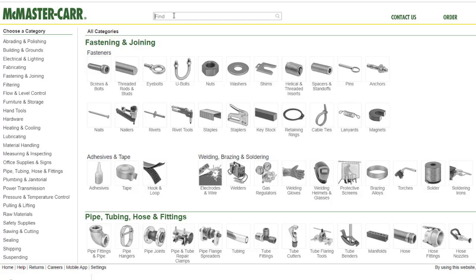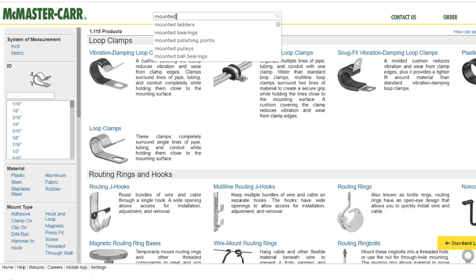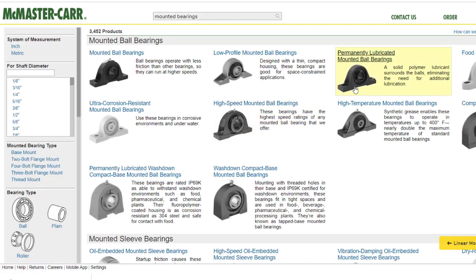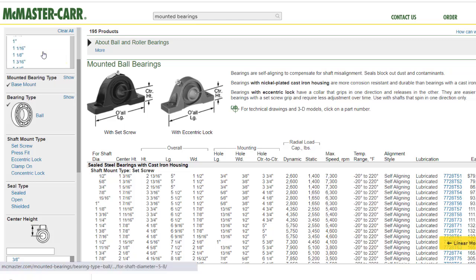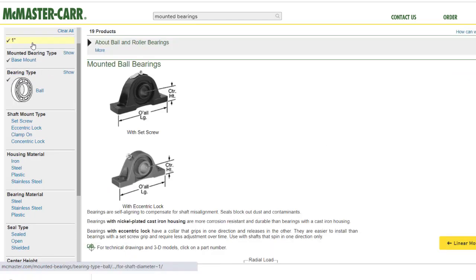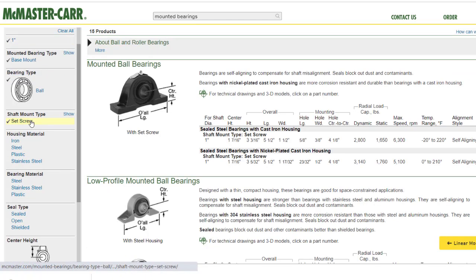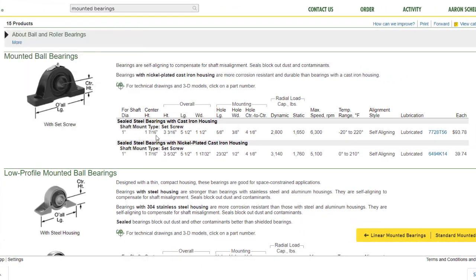Here I am in the McMaster Carr catalog. Let's see if we can find some bearings that will actually work in this scenario. I am going to do a search for mounted bearings. Here are all the different bearing mounting types. And over here we can pick that we want a ball bearing and that we want a pillow block mount. Let's pick just a 1 inch shaft with a set screw shaft mount. We can see here that I can use this bearing here, which is cast iron, about $93. Here is one here that is nickel plated cast iron that is about $39.